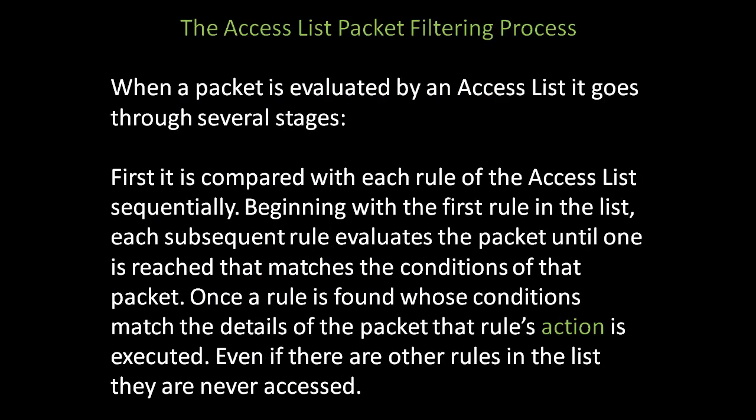The access list packet filtering process. When a packet is evaluated by an access list, it goes through several stages. First, it is compared with each rule of the access list sequentially. Beginning with the first rule in the list, each subsequent rule evaluates the packet until one is reached that matches the conditions of that packet. Once a rule is found whose conditions match the details of the packet, that rule's action is executed. Even if there are other rules in the list, they are never accessed.